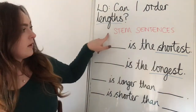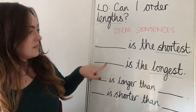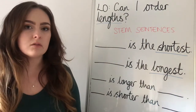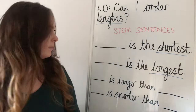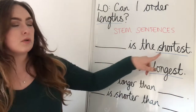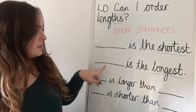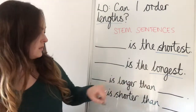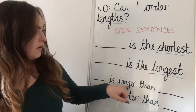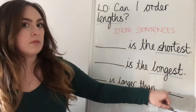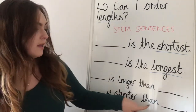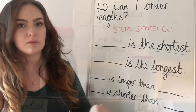Here are a few of our stem sentences that we are going to be looking at today. We'll be using them later on in the lesson. Something is the shortest. Something is the longest. Something is longer than something else. Something is shorter than something else.